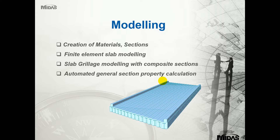We'll focus on the creation of materials and sections, then the finite element slab modelling and the slab grillage modelling with the composite sections - that's the separation between the two models. We will be flipping between two models but I will tell you before I do that every time. Then we're going to use the general section property calculator within the programme.